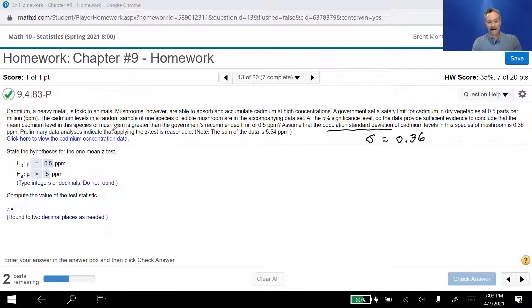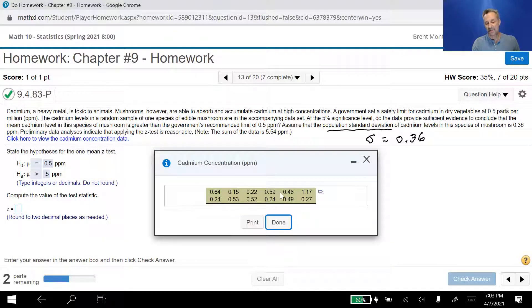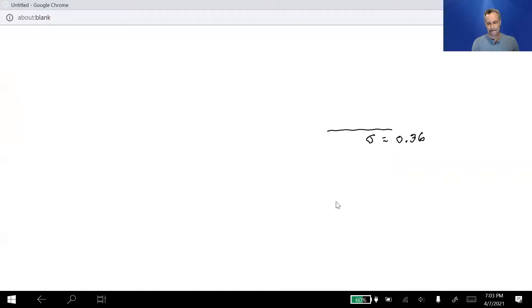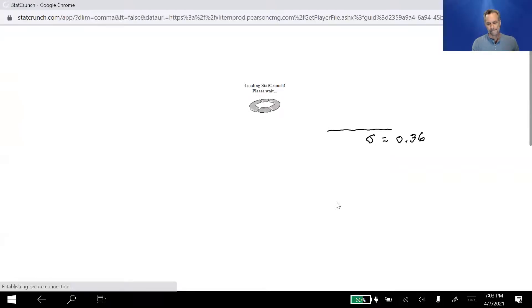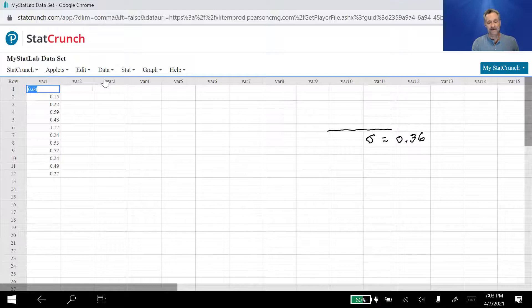It says preliminary data analysis indicate that applying the Z test is reasonable. Remember the assumptions there. So it was a simple random sample, for example. The data was either from a normally distributed or bell-shaped population, or we have a large sample size of at least 30. When we click on this data set, we see we only have 12 data pieces. So it's not a large data set. So it has to be the case that it was normally distributed population. Otherwise we couldn't do the Z test. So we click here to open it up in StatCrunch.